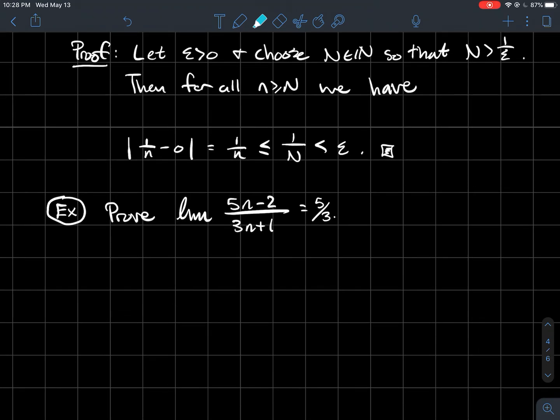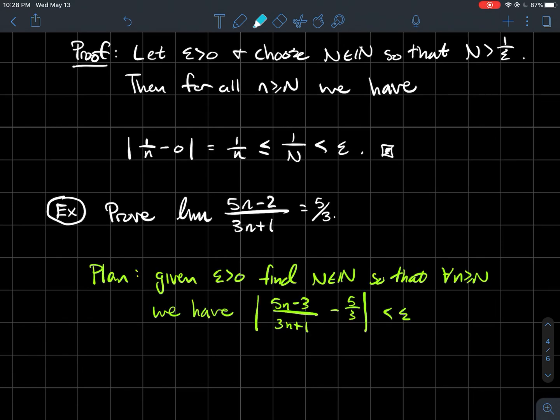Let's do one that's slightly more complicated. Prove using the definition that the limit of (5n-2)/(3n+1) equals 5/3. Start with your scratch work and plan first. What are you going for? Given epsilon, we're supposed to find a natural number N so that for all n ≥ N...